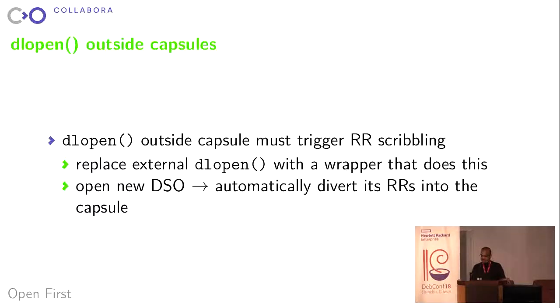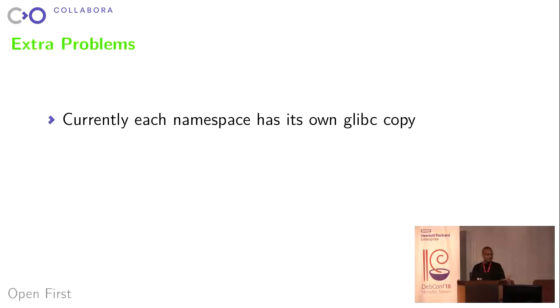Extra problems. Currently each namespace has its own glibc copy, and this was true until 3 this morning — it's no longer the case. It turns out it sort of works: if you don't pass memory allocation or free across the boundary, and you're not using threads, it basically works — which was a surprise. But there was a deadlock in threads causing a bizarre symptom: if you called setuid with libpthread loaded, your entire program would livelock and spin in an infinite loop inside libc.